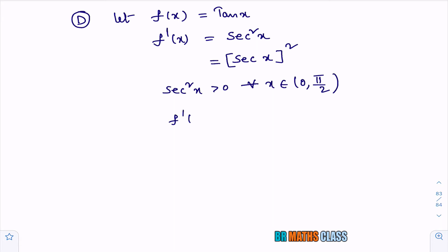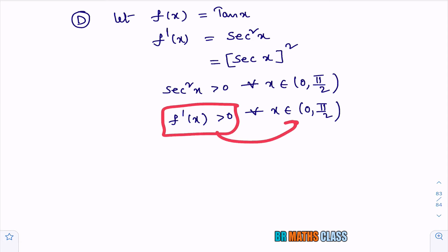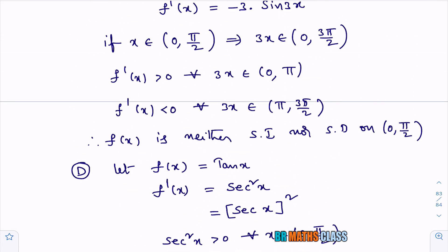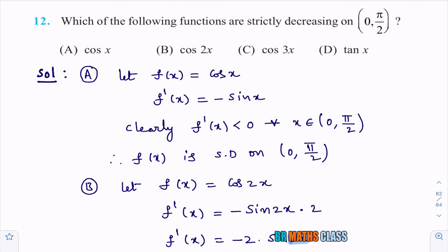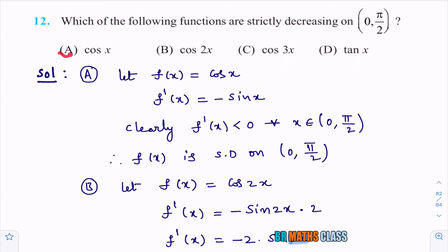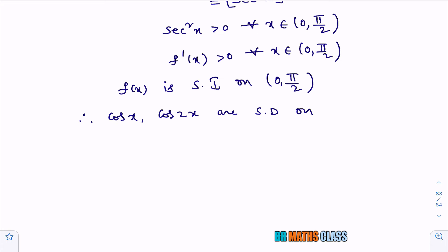Since f′(x) > 0, f(x) = tan x is strictly increasing on (0, π/2). In summary: cos x is strictly decreasing, cos 2x is strictly decreasing, cos 3x is neither, and tan x is strictly increasing. Therefore, cos x and cos 2x are the functions that are strictly decreasing on (0, π/2).